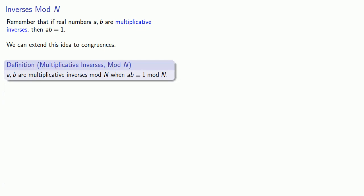Remember that if real numbers a and b are multiplicative inverses, then the product ab is equal to 1. We can extend this idea to congruences and define multiplicative inverses mod n. a and b are multiplicative inverses mod n when a times b is congruent to 1 mod n.